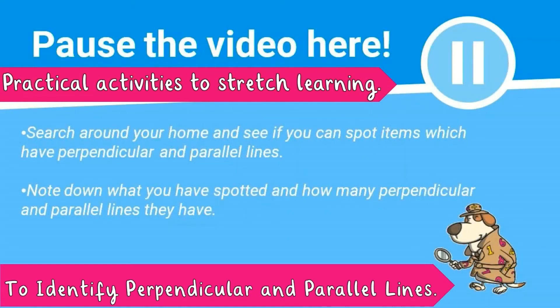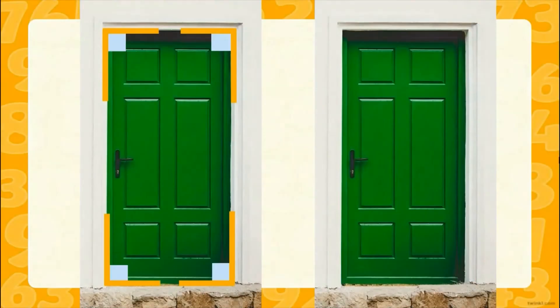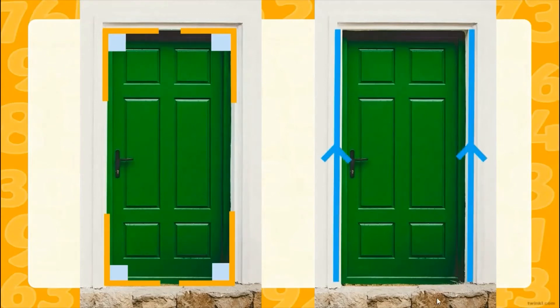Search around your home and see if you can spot any items which have perpendicular and parallel lines. This door has four pairs of perpendicular lines, as there are four right angles, and two pairs of parallel lines.